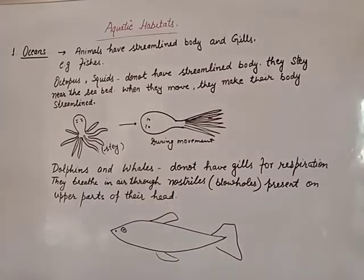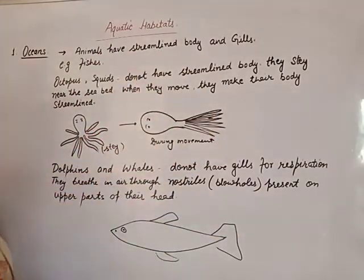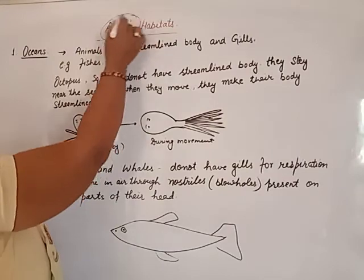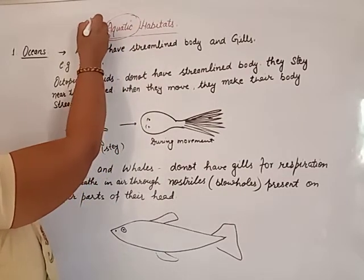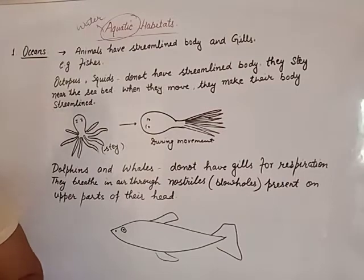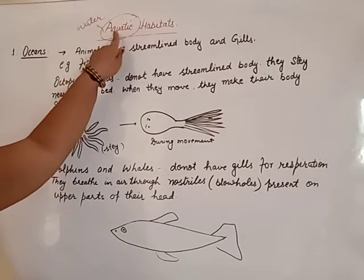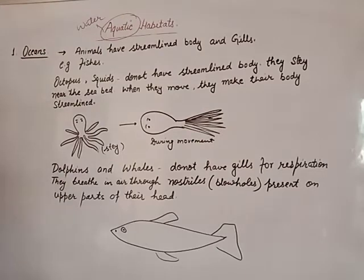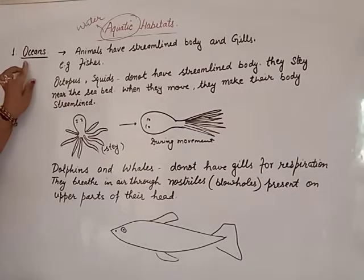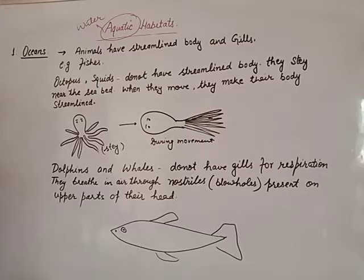Good morning students, today we will discuss about the aquatic habitat. Aquatic habitat means the plants or animals live in the water. 'Aquatic' means water, so we can say water habitat or aquatic habitat. In case of aquatic habitat, we have different regions like ocean, like river, like pond, like sea of normal water. Ocean is sea of saline water.